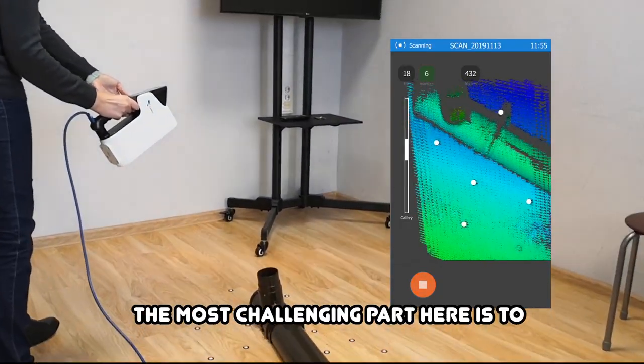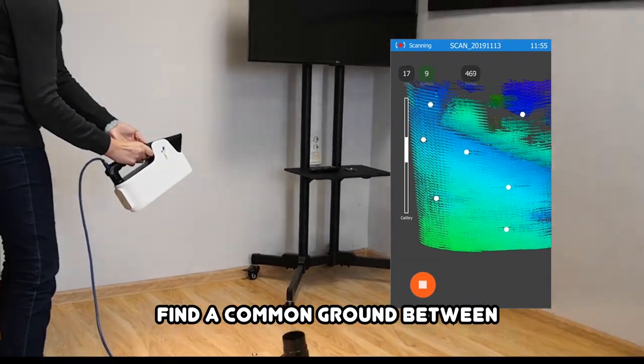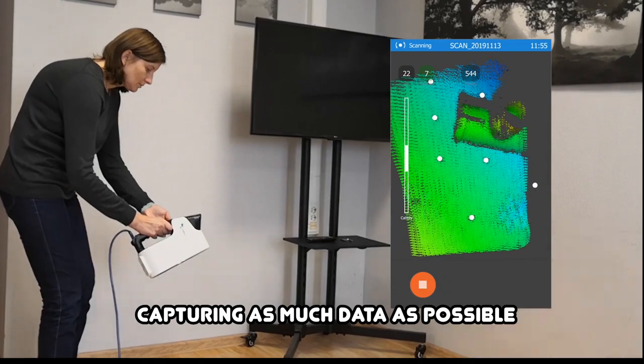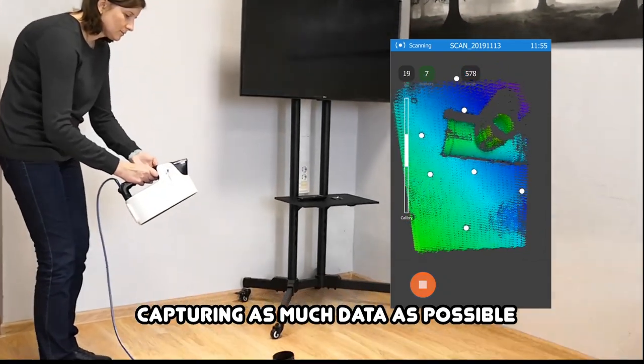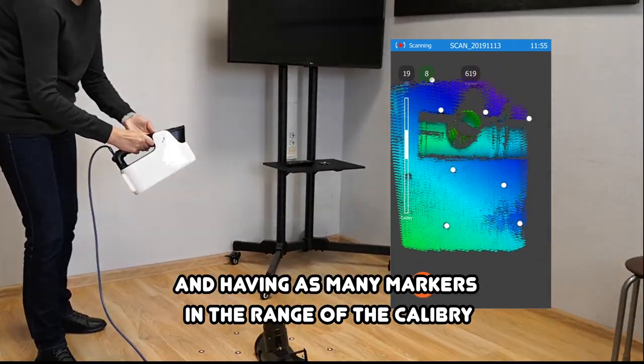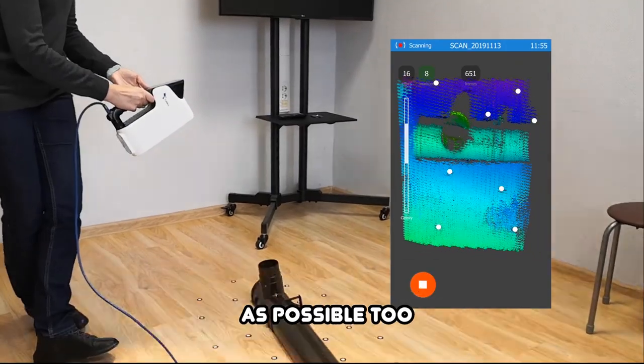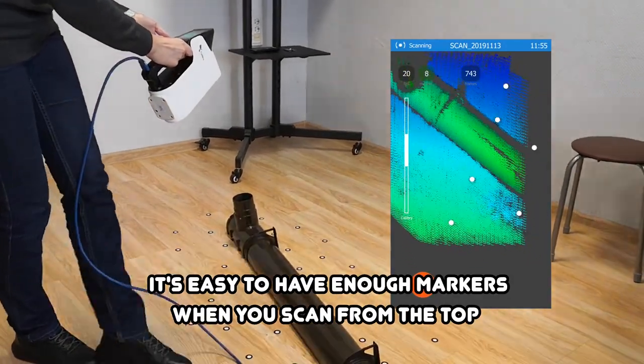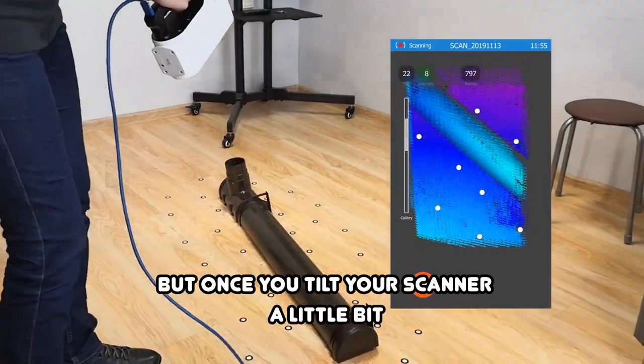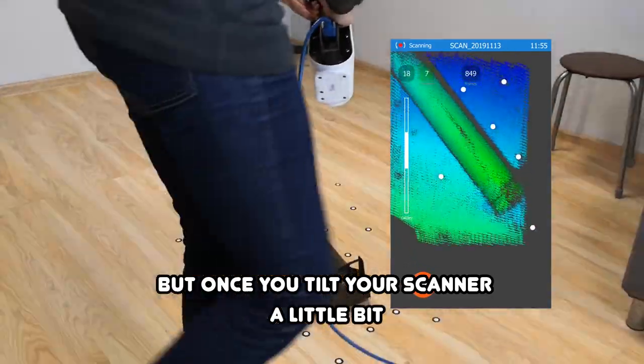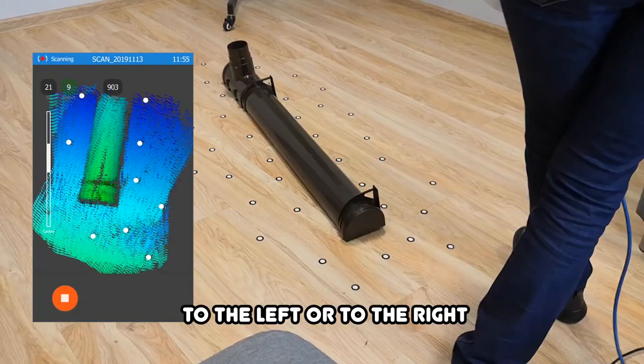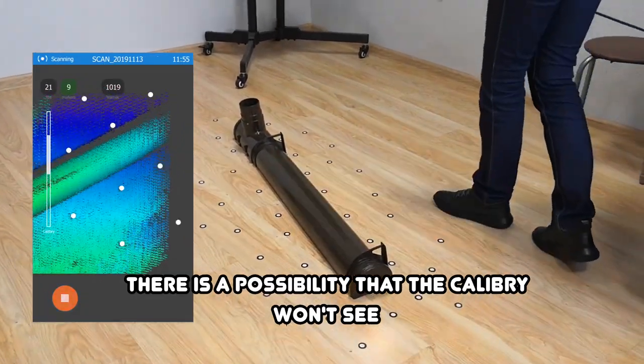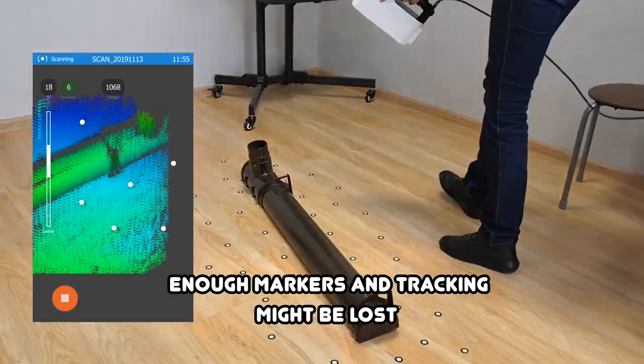The most challenging part here is to find a common ground between capturing as much data as possible and having as many markers in the range of the Calibri as possible too. It's easy to have enough markers when you scan from the top, but once you tilt your scanner to the left or to the right, there is a possibility that the Calibri won't see enough markers and tracking will be lost.